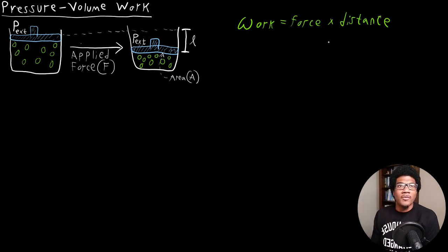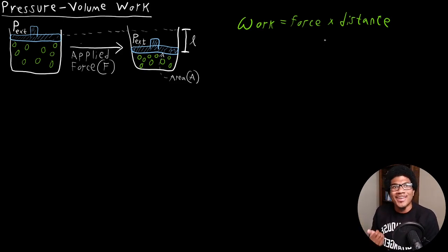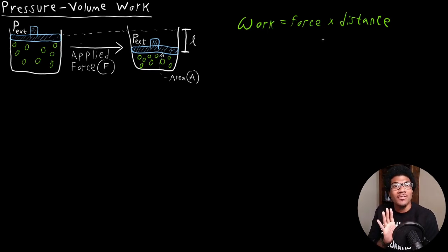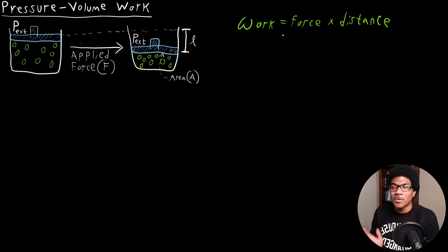If the applied force is opposing the motion, then the work is going to be fighting against that. If it's aiding that motion, then the amount of motion achieved is aided by that force. So that's work done on your system. But this is just a general definition of work.